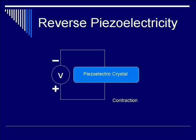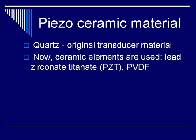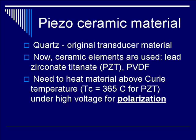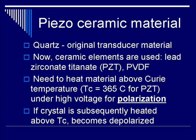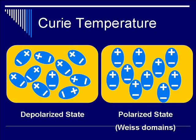This effect is put to great use in diagnostic medical ultrasound. Regarding piezoelectric ceramic materials: originally, quartz was the first material used. More recently, ceramic elements have overtaken quartz, such as lead zirconate titanate (PZT) and PVDF. For both materials, you need to heat them above their characteristic Curie temperature — 365°C for PZT — under high voltage conditions for polarization. If the crystal is subsequently heated above the Curie temperature, it becomes depolarized. Under polarization, all dipole moments are aligned in one direction; in the depolarized state, dipoles are oriented randomly.